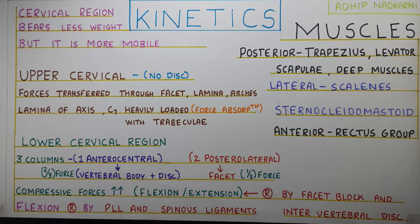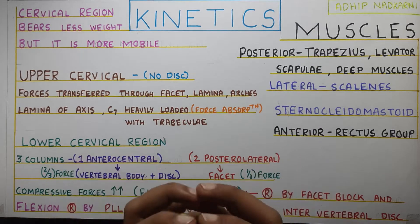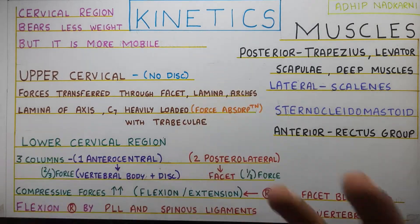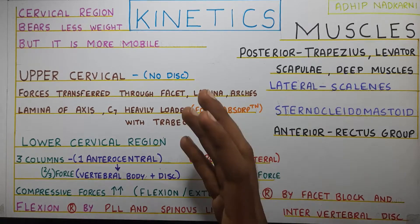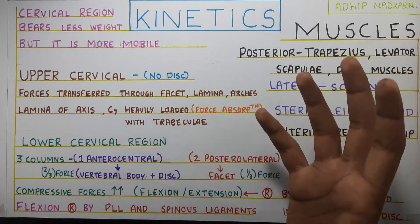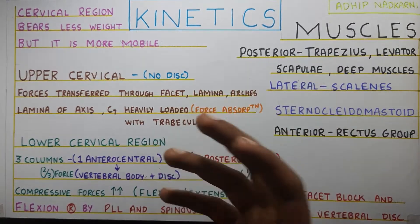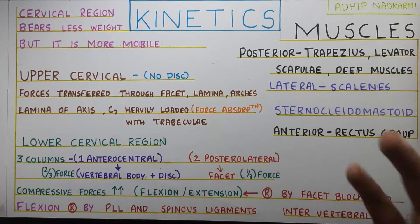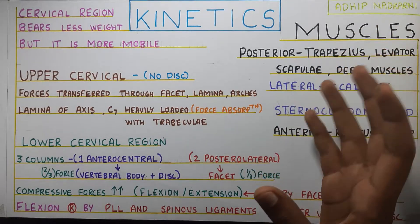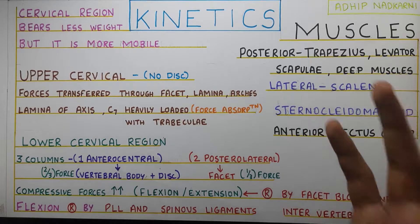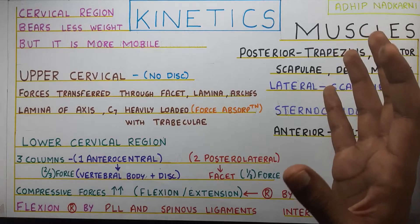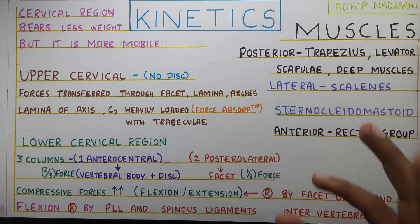In this video we are going to talk about the kinetics of the cervical spine. Kinetics is basically the forces that are acting on the joint — in this case, the cervical spine. These forces are created by your muscles, and there are also external forces such as gravity. We will be talking about both, but the muscles we will just be introducing here; we will discuss them in depth, including their attachments and the movements they create, in future videos dedicated only to the muscles.